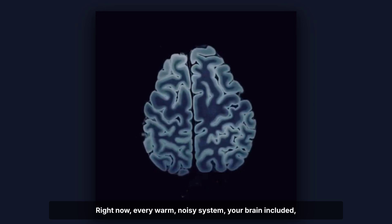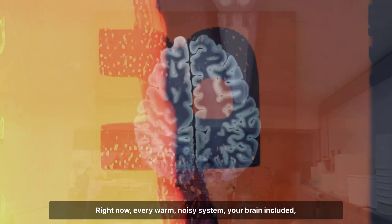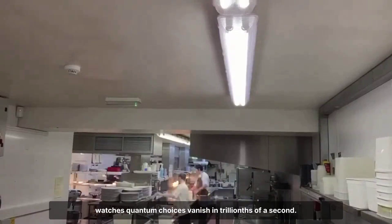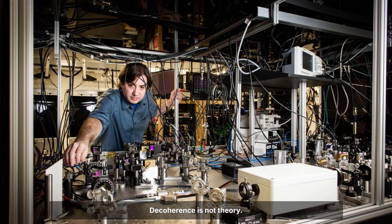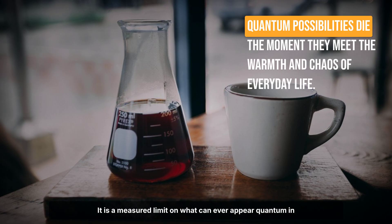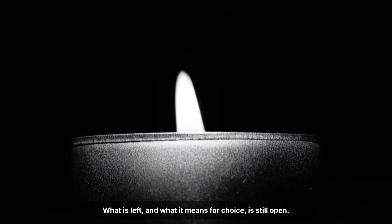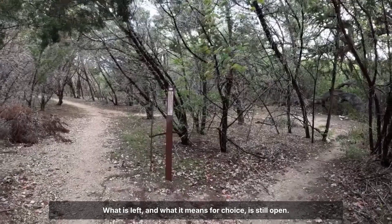Right now, every warm, noisy system, your brain included, watches quantum choices vanish in trillions of a second. Decoherence is not theory. It is a measured limit on what can ever appear quantum in daily life. The math draws the boundary. What is left, and what it means for choice, is still open.